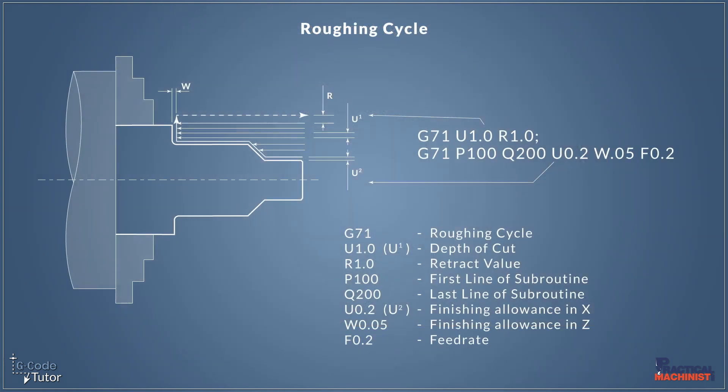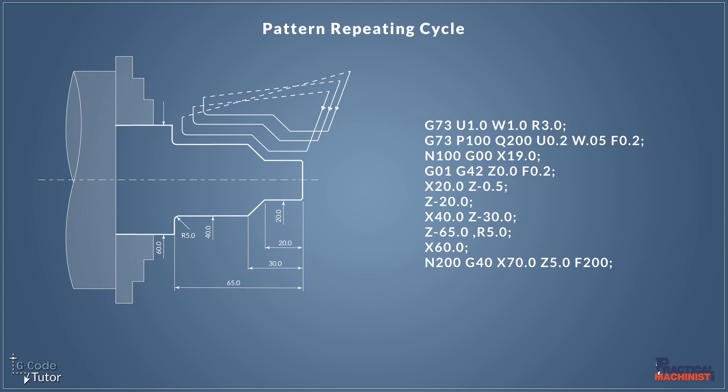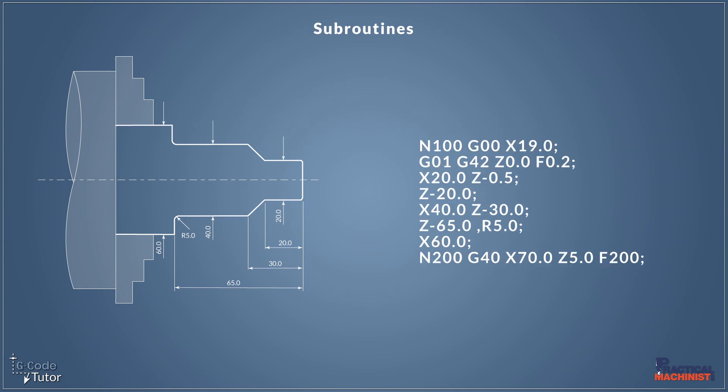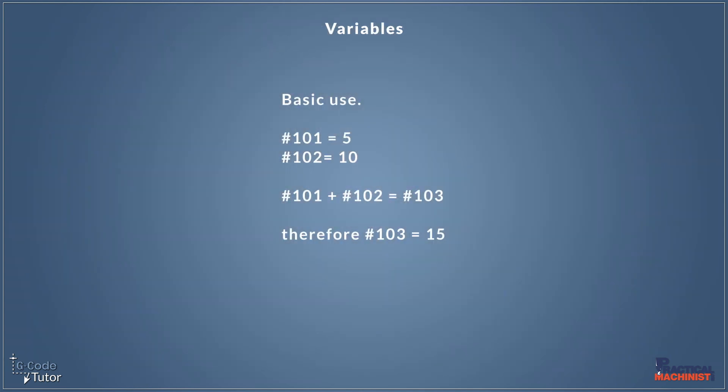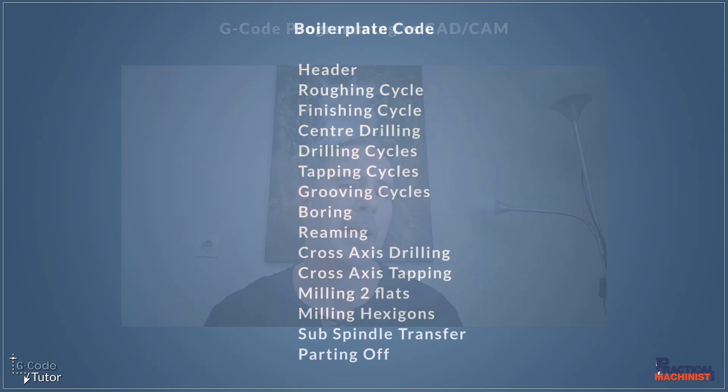For example, we can use cycles which makes the code very small and we use very few lines of code to produce our parts. We use subprograms and subroutines to reuse the same code over and over to produce our profiles. With macro programming we can use variables to speed up our programming processes, and my all-time favourite is using boilerplates — sections of code we've used before that we can copy and paste in and make a few edits to have a fully written program. By using a combination of these methods we can really speed up our G-Code programming to make almost any parts on a lathe or machining centre faster than we can with CAD-CAM.